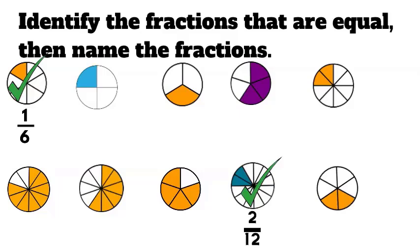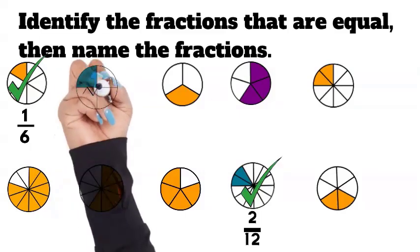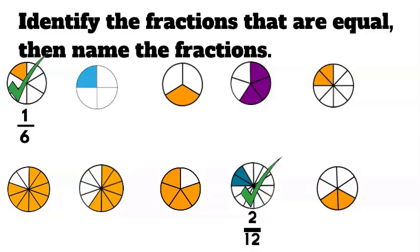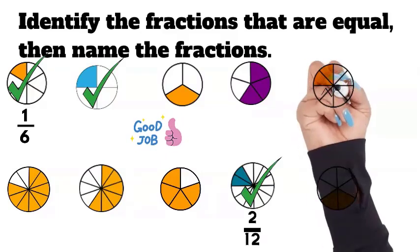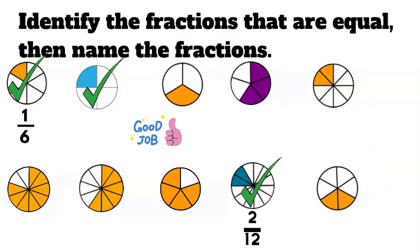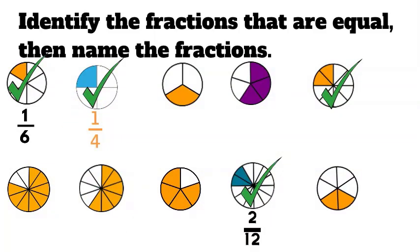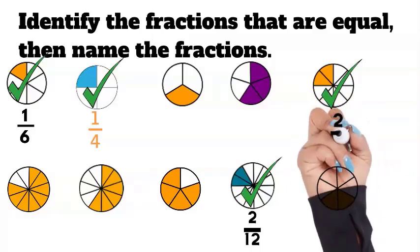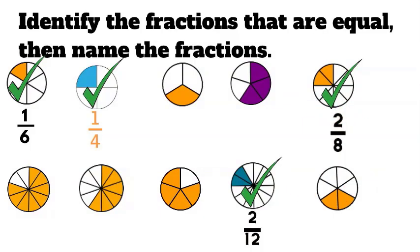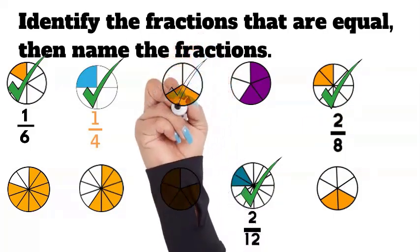Great job. Let's try the next one on the list. Look closely at the amount shaded and see if you can find another one with the same amount shaded. Do you see it? It's the one on the very end. Now what is the fraction for each? This fraction is one fourth and this fraction is two eighths. So one fourth is actually equal to two eighths.